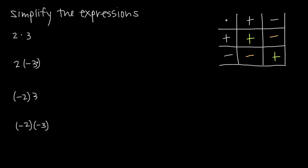When we want to multiply either two positive numbers together, two negative numbers together, or a mix of positive and negative numbers, what will be the sign of the result? We have this chart here to help us remember. If we multiply a positive number by a positive number, we find the intersection of these two and we're going to get a positive number. If we multiply a negative number by a negative number, we're also going to get a positive number.